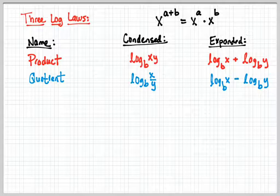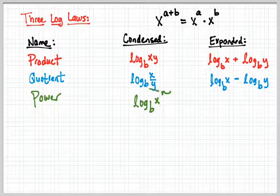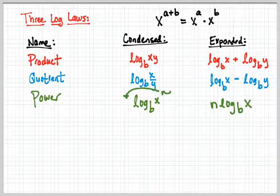What's the last property here? Power property. The power looks like log base b of x^n. And the expanded form is n × log_b(x). The n moves right to the front. For this concept, we're going to be moving between condensed and expanded form. This is a tool that allows us to do bigger things.